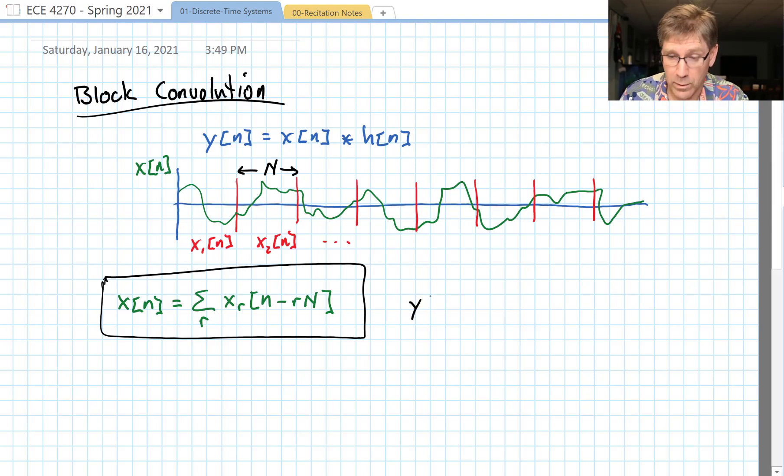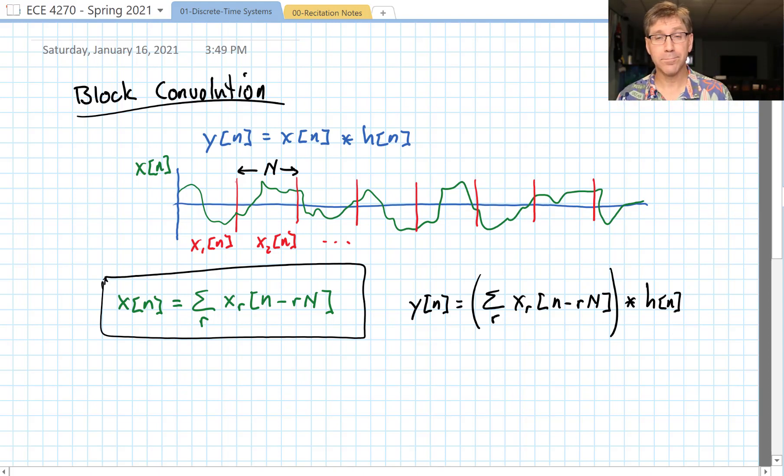So now we have another clever way of writing x. What happens when we throw this into the convolution equation? Well we get that y[n] is equal to... now we have our sum to deal with x_r[n - rN] convolved with h[n]. Well, convolution is linear, we have distributive and associative properties, and so it becomes pretty straightforward to turn this into a sum over r of x_r[n - rN] convolved with h[n]. So in other words, we just convolve each of those chunks.